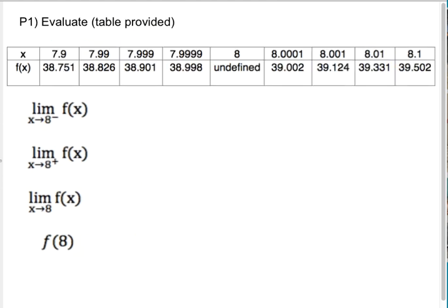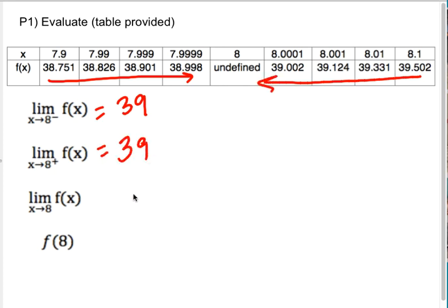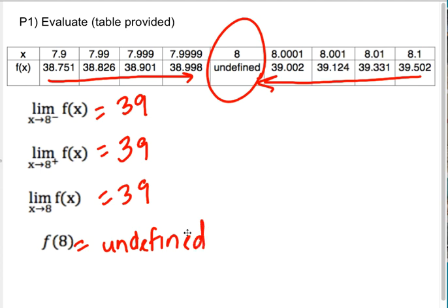Okay, so let's keep moving. So here's P1, try the same idea. From the left, as we approach from the left, it looks like these numbers are getting closer and closer to 39. From the right, it looks like these numbers are getting closer and closer to 39, which means the double-sided limit is 39, but it says very clearly that the function is undefined at 8.